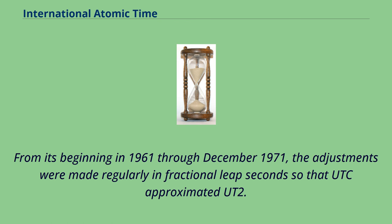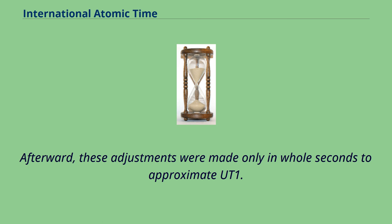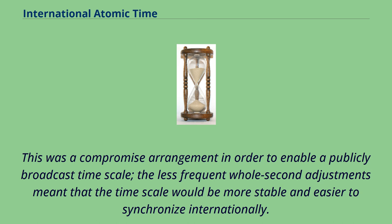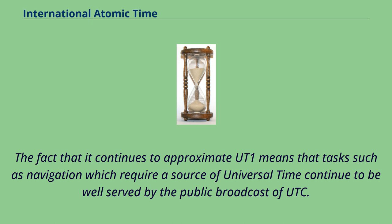From its beginning in 1961 through December 1971, the adjustments were made regularly in fractional leap seconds so that UTC approximated UT2. Afterward, these adjustments were made only in whole seconds to approximate UT1. This was a compromise arrangement in order to enable a publicly broadcast time scale. The less frequent whole-second adjustments meant that the time scale would be more stable and easier to synchronize internationally. The fact that it continues to approximate UT1 means that tasks such as navigation, which require a source of Universal Time, continue to be well served by the public broadcast of UTC.